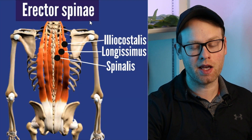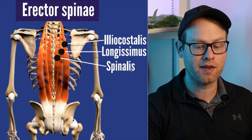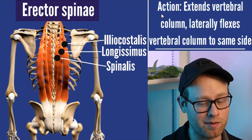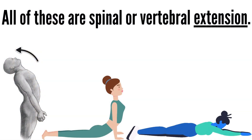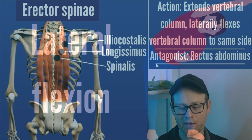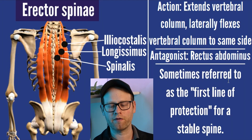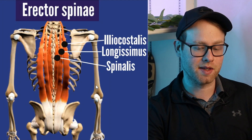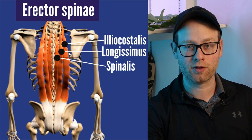Next up, we have the erector spinae muscles — three different muscles: the iliocostalis, the longissimus, and the spinalis. These guys do the opposite action of the rectus abdominis. They extend the vertebral column and also laterally flex it to the same side. These erector muscles directly oppose the rectus abdominis and are sometimes referred to as the first line of protection for a stable spine — they give the spinal column a little bit of extra protection based on where they're located.